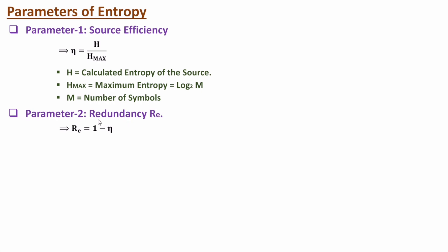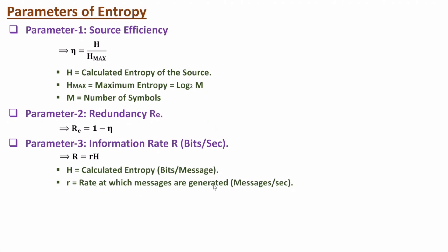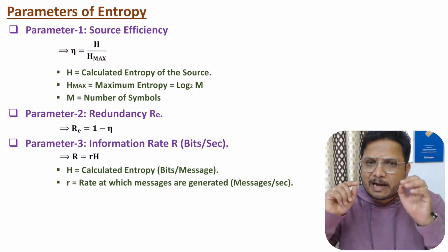Redundancy tells us how much extra data is present, and in percentage it is (1 − efficiency) × 100. The third parameter is information rate, capital R, in bits per second. Information rate R = r × H, where H is the calculated entropy in bits per message and r is the rate at which messages are generated in messages per second. Multiplying these two, the message unit cancels and we get bits per second. These three parameters are very essential in entropy.